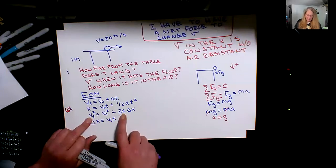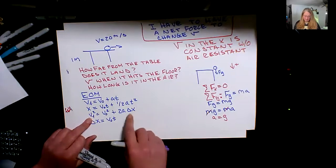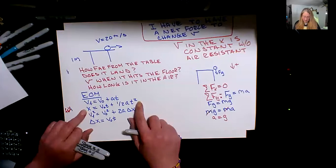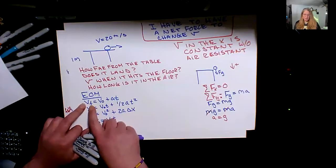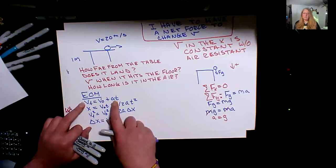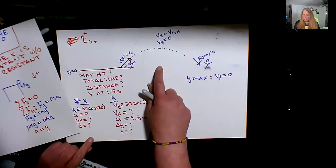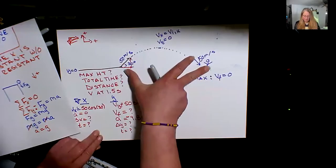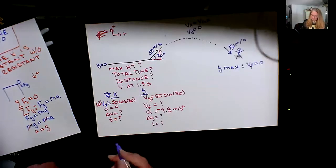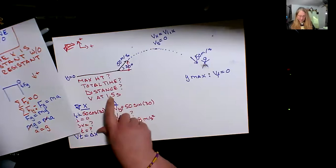If I know v final is zero and I know v initial, I can solve for time to the peak. That gives me time to half the distance. If I double it, I get the total time in the air. And if I have the total time, I can get the distance because x is constant — rate times time equals distance, delta x. That's the strategy: solve for time at the peak, double it, then multiply by the x-velocity to get range.